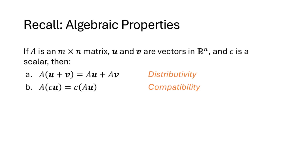To get us started, let's remember that when we defined multiplying a matrix by a vector, we talked about these two nice algebraic properties. If we have a matrix times the sum of two vectors — A times (u + v) — that's the same as Au plus Av; that's distributivity. And if we have A times c times u, that equals c times Au; I called that compatibility.